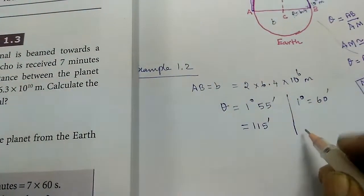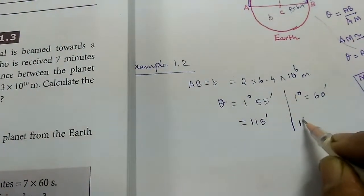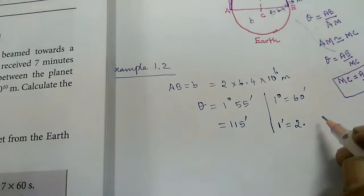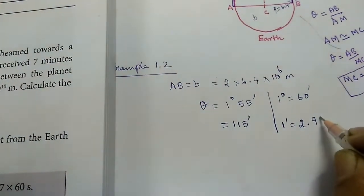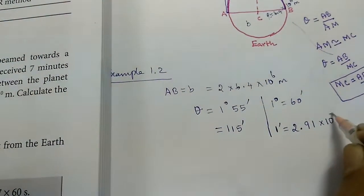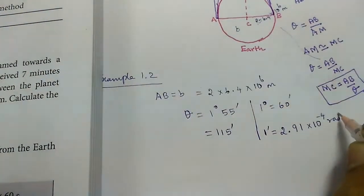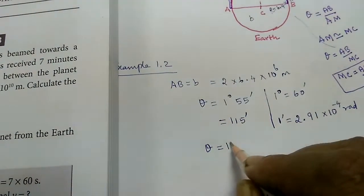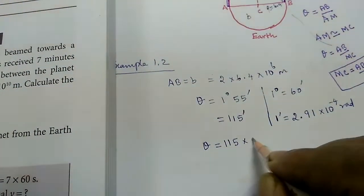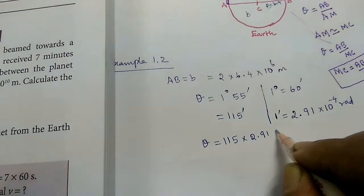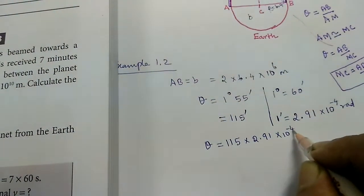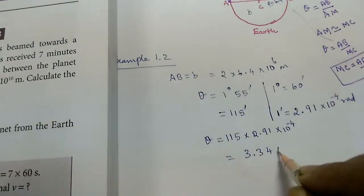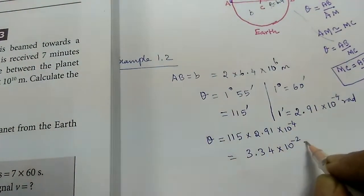From the last class, we have 1 minute equals 2.91 into 10 power minus 4 radians. The tabular column in the previous page will guide us through this. Now, multiply: 115 into 2.91 gives us 3.34 into 10 power minus 2 radians. So theta equals 3.34 into 10 power minus 2 radians.